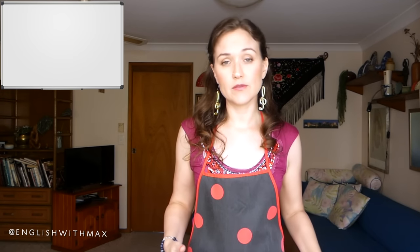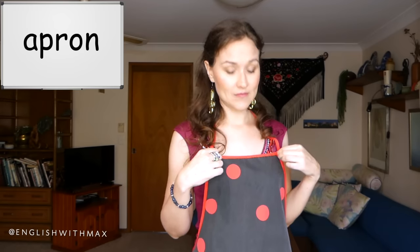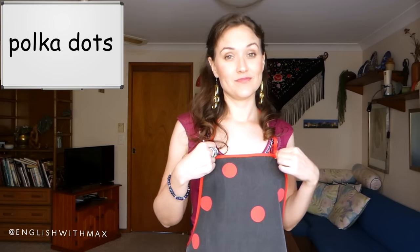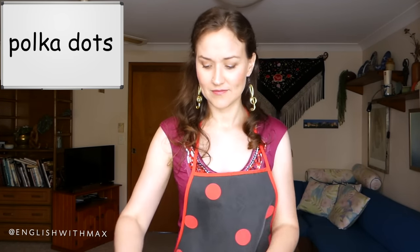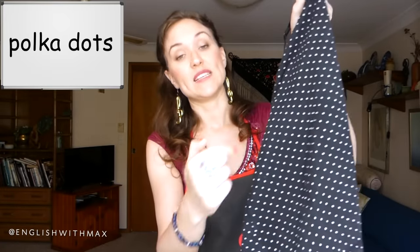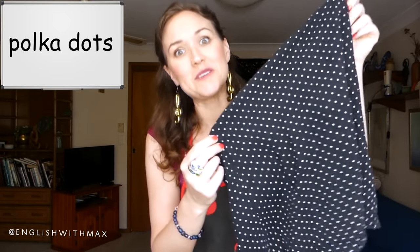A thing like this that you put over your clothes if you're going to cook or maybe paint is called an apron. These dots on here are called polka dots. This also has polka dots — they're just smaller polka dots.